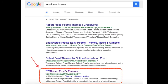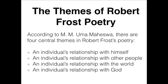The final thing you can do is to Google your prescribed text. When I Google 'Robert Frost themes', I get 562,000 results. On the first page, there is an essay which asserts that Frost's poetry contains four major themes: theme one, an individual's relationship with himself; theme two, an individual's relationship with other people; theme three, an individual's relationship with the world; and theme four, an individual's relationship with God.